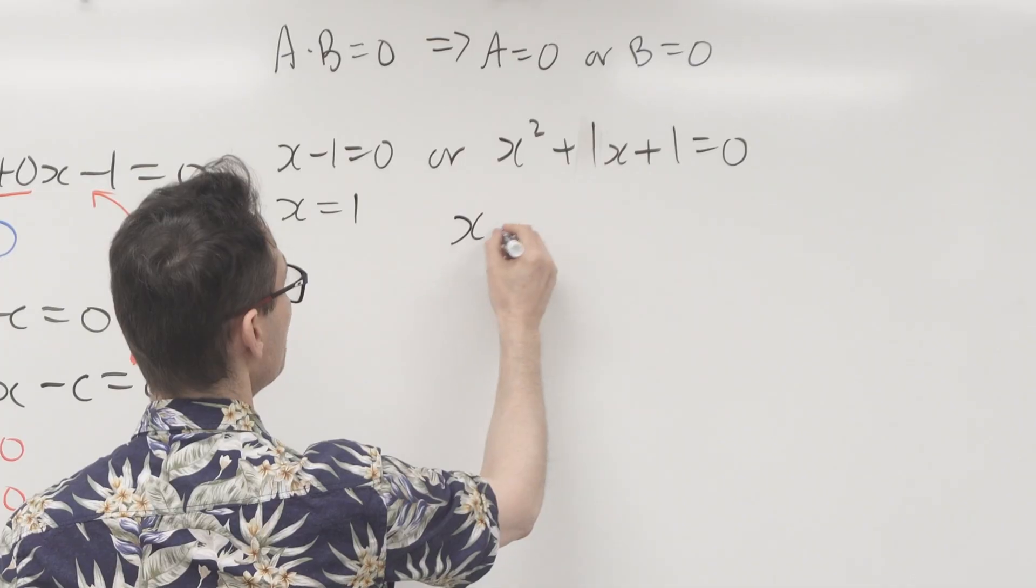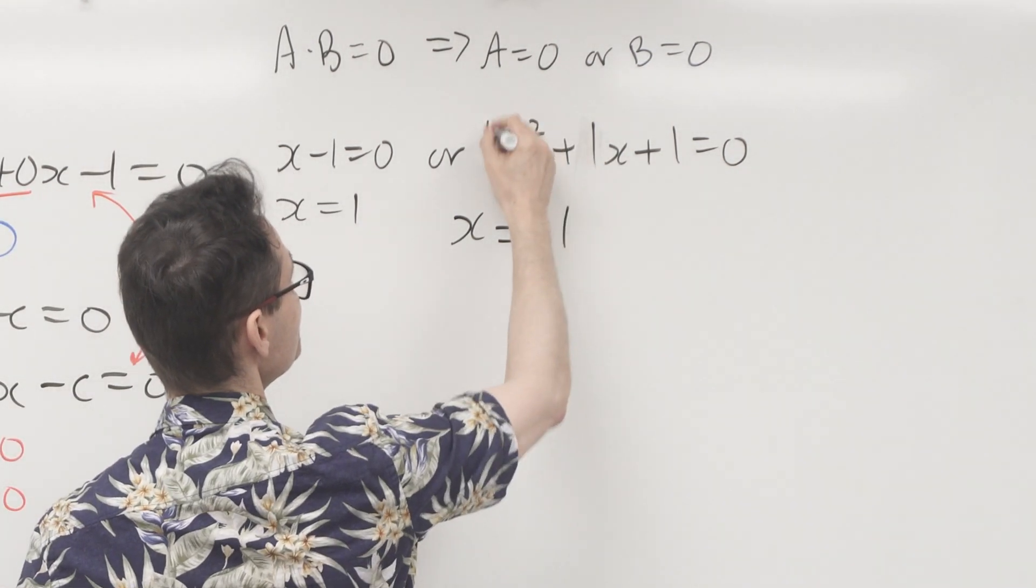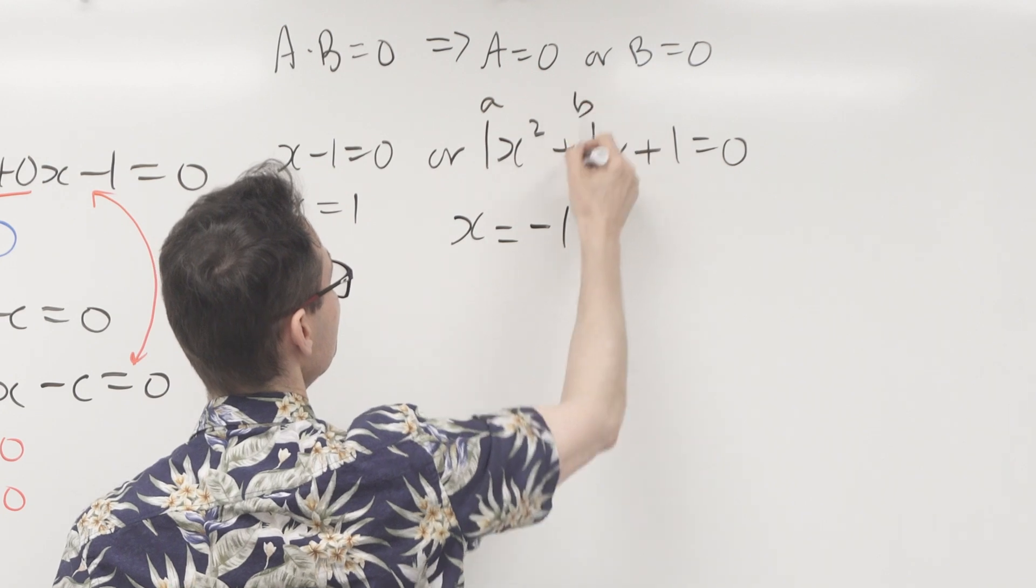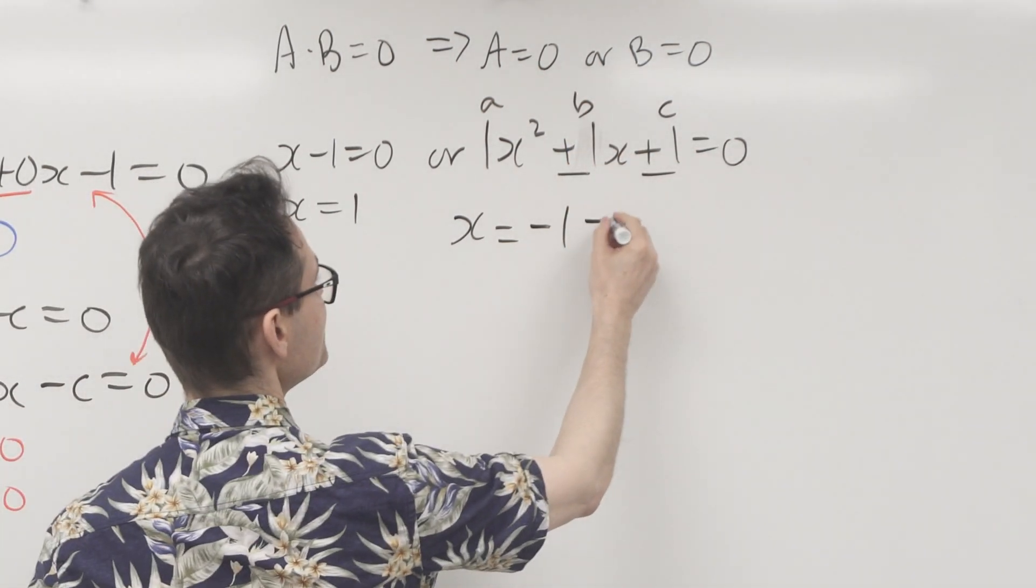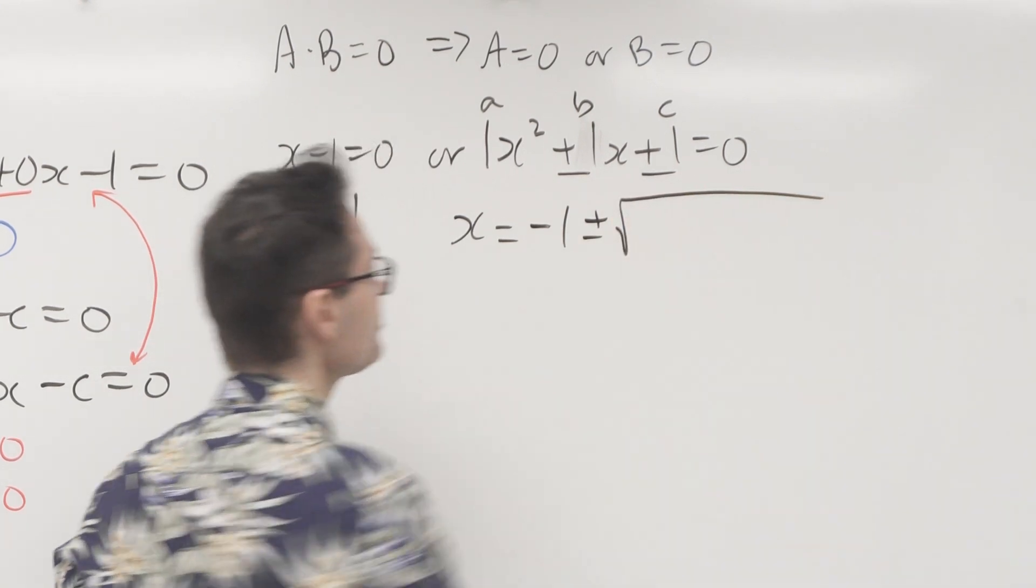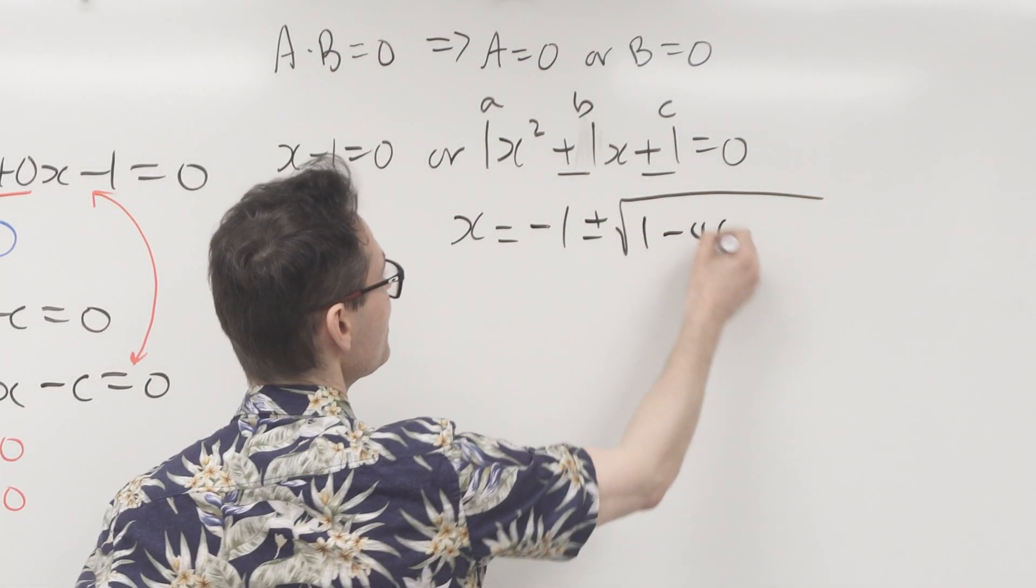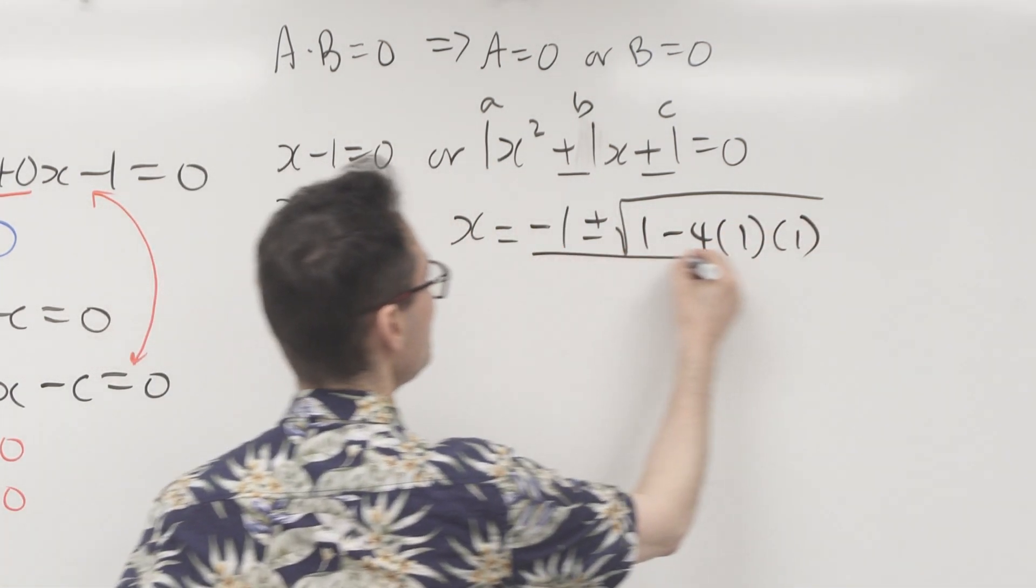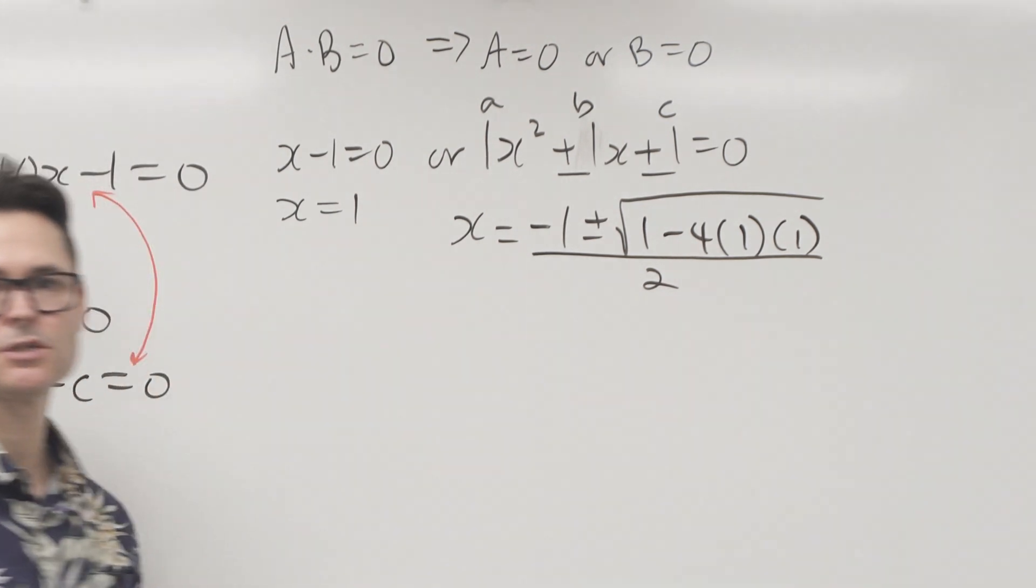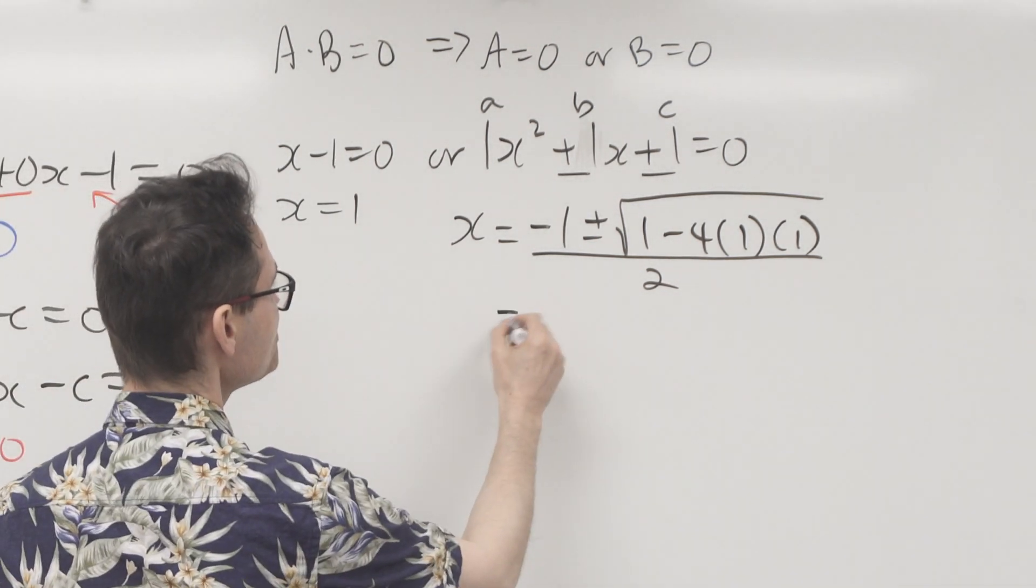So I'm going to use the quadratic formula here, which is, well, you know what it is, negative b. So this is your a and this is your b and this is your c. So negative b plus or minus the square root of b squared. So one squared is one minus four times a, which is one, times c, which is one, all over two times a, which is two times one or two. This is really cool. Now watch what happens here.